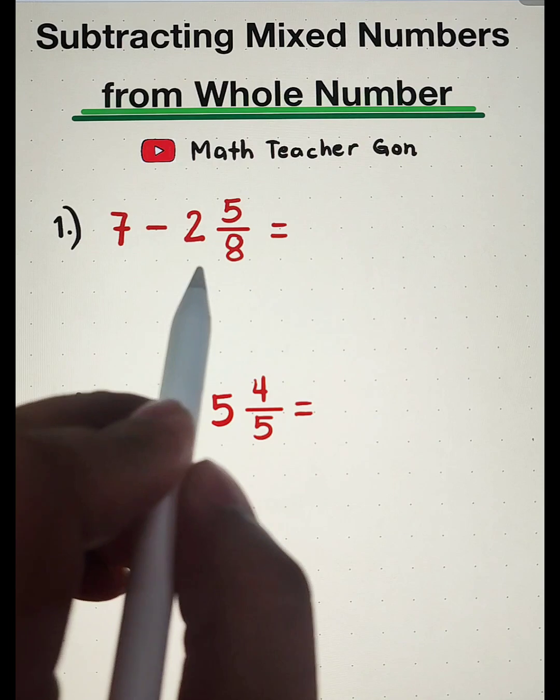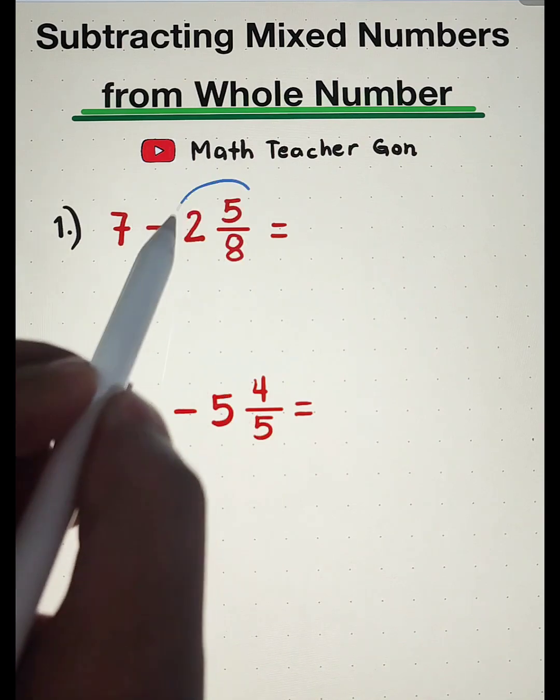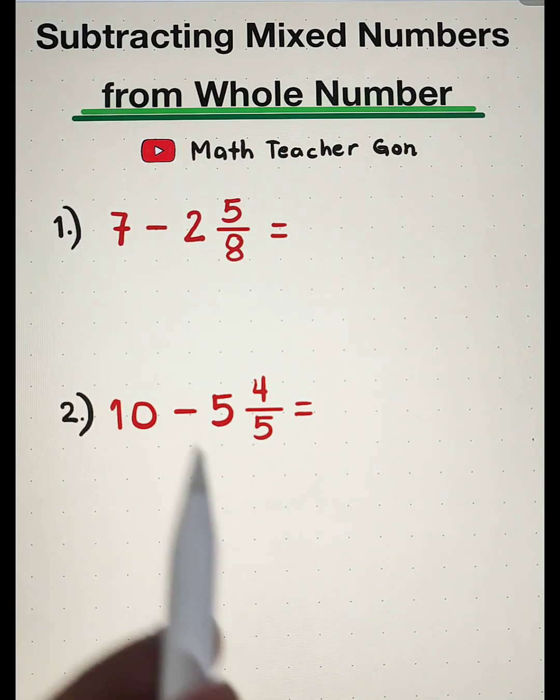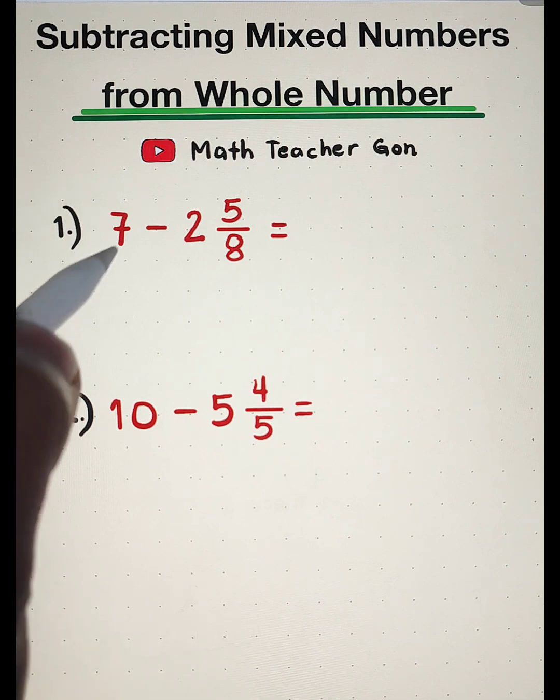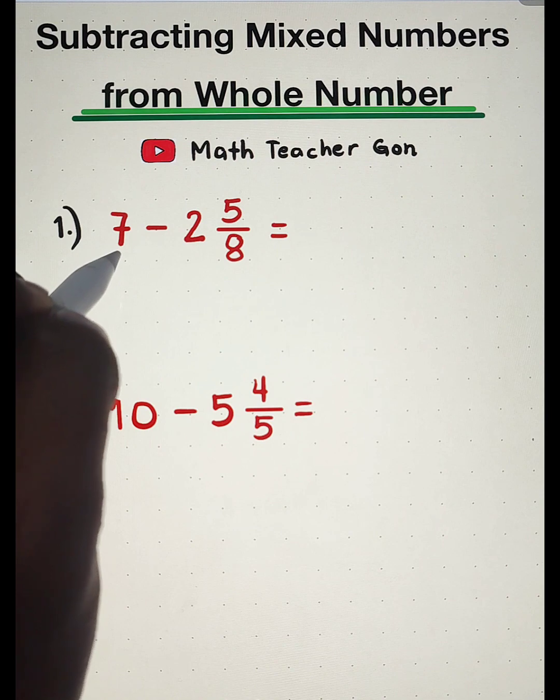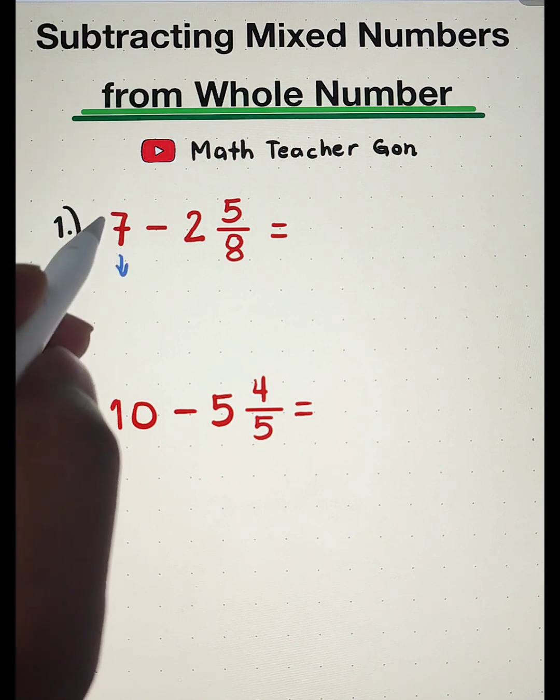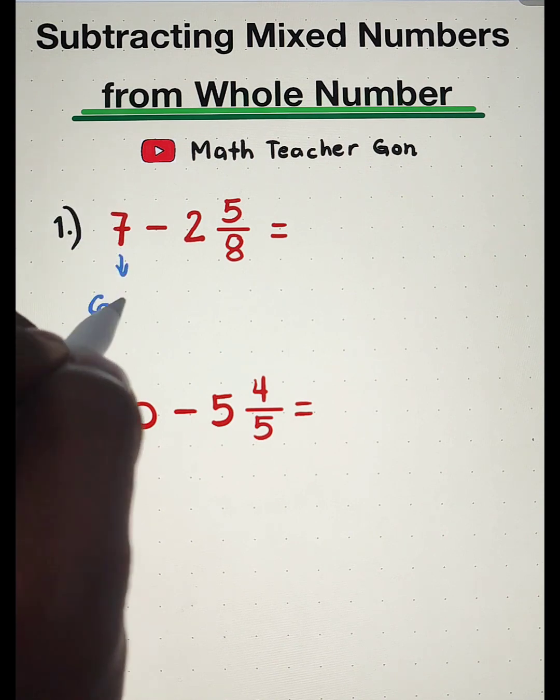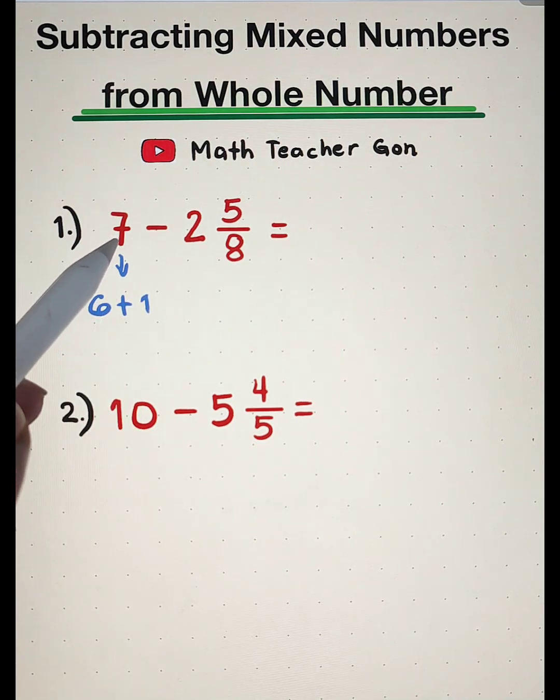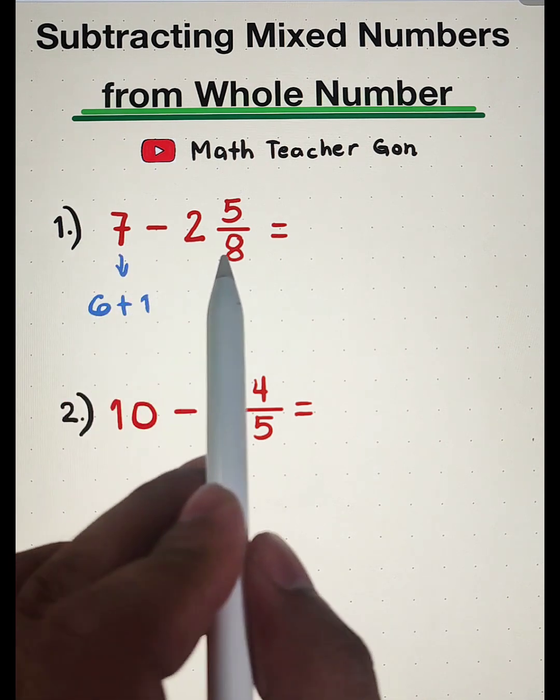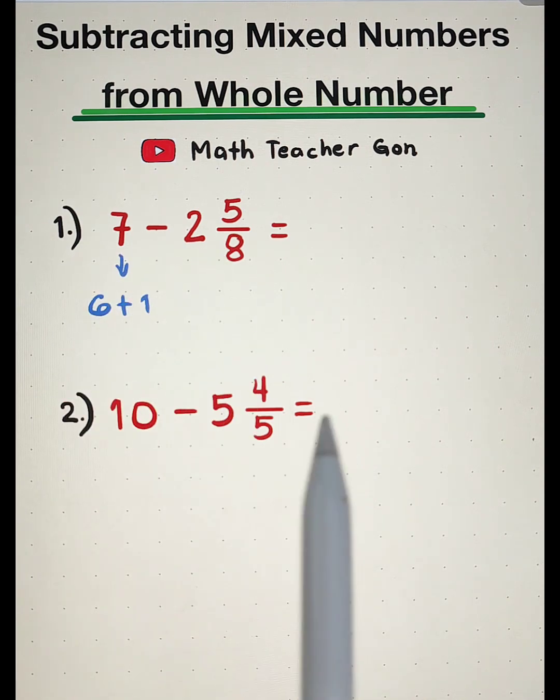So in other cases, they are converting this one into improper fraction. But in this tutorial video, let's do it. First, we will break down 7 into 6 plus 1. The target here is to convert 7 into a mixed number for us to directly subtract 2 and 5 over 8.